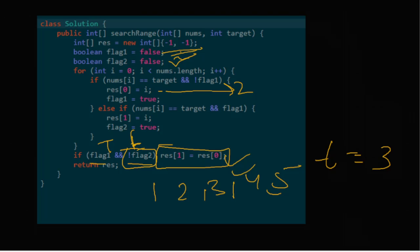If the target was something like 0, it will iterate through the whole array but none of the conditions would trigger, so it directly returns the result [-1, -1]. If there are any queries, let me know. Please refer to the binary search solution as that's the better solution. Thank you.